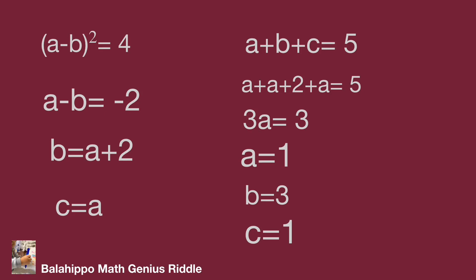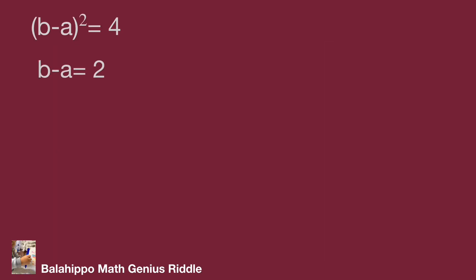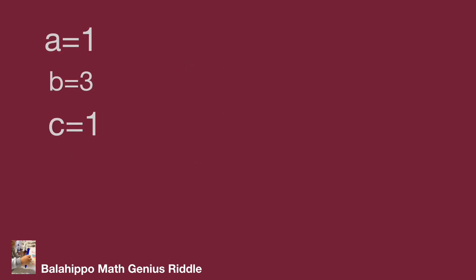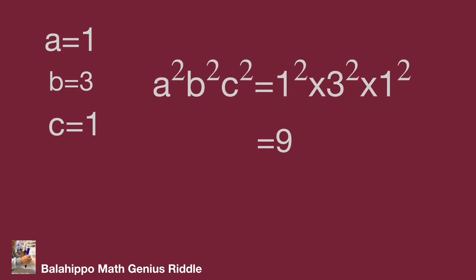That's the answer. We also check b minus a equals 2, giving b equals a plus 2 and c equals a; and b minus a equals minus 2, giving b equals a minus 2 and c equals a — these yield the same results as before. So the only answer is a equals 1, b equals 3, c equals 1. Substituting a, b, c with these values into a squared times b squared times c squared, we get the value 9. That's the answer. Do you find it? Hope you enjoy the video.